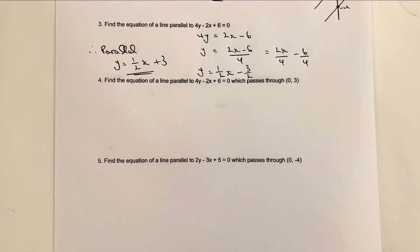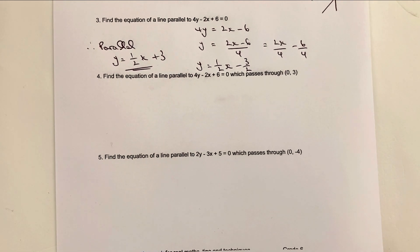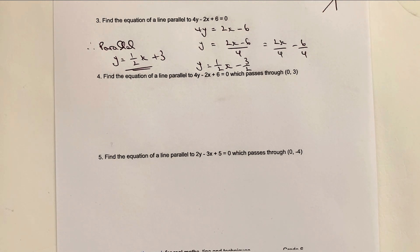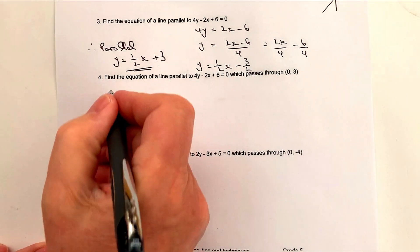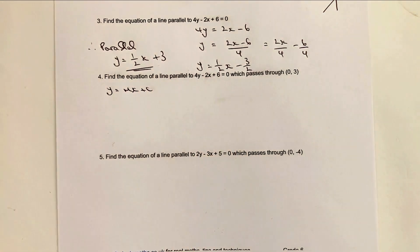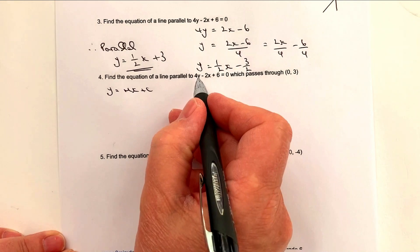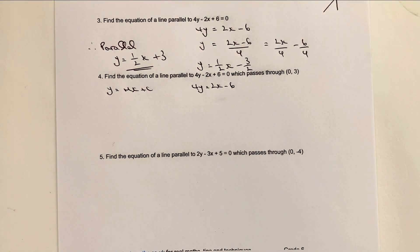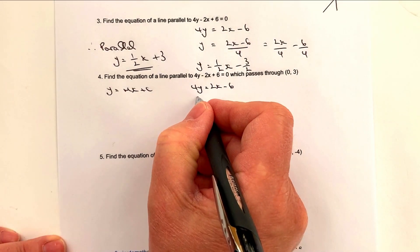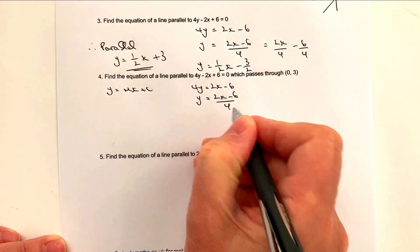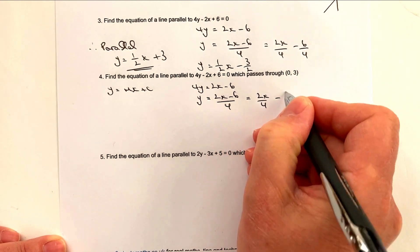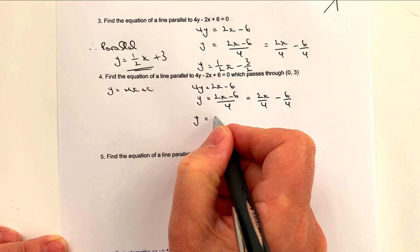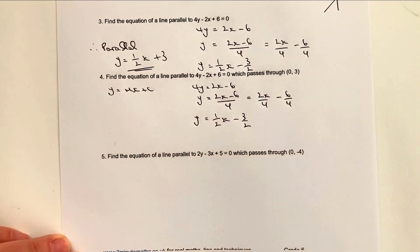Please stop the video, have a go, then compare your solutions. Number four is pretty much the same — we need to put it into the form y = mx + c. We've got 4y = 2x − 6, just like before. We can write this as y = (2x − 6)/4, which becomes 2x/4 − 6/4, and therefore y = ½x − 3/2.